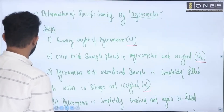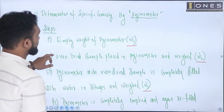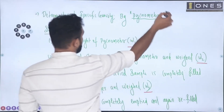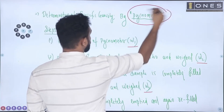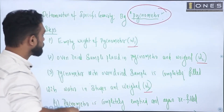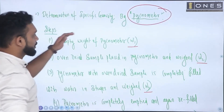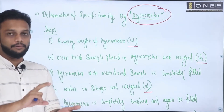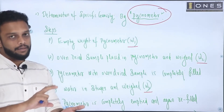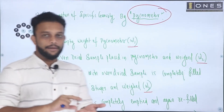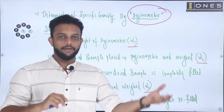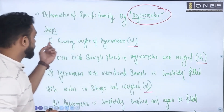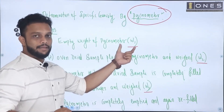So if you look at the steps and the equation, it is the appropriate figure. What is the test? The pycnometer test. Determination of specific gravity is done by means of pycnometer. There are steps. Step one: the empty weight of the pycnometer is taken. That is W1.